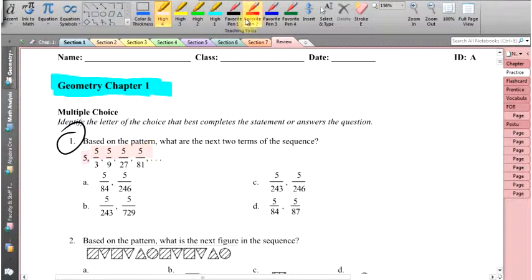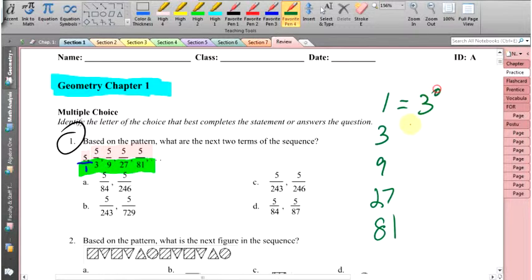Well, all the numerators are 5 and you have to look carefully at all the denominators. The first denominator is actually a 1, and so when I write all the denominators out: 1, 3, 9, 27, 81, I start to see a pattern. What's the pattern? You have to be comfortable with your 3's as a base raised to an exponent. 3 to the 0 power is 1, 3 to the first power is 3, 3 to the second power is 9, 3 to the third power is 27, 3 to the fourth power is 81.